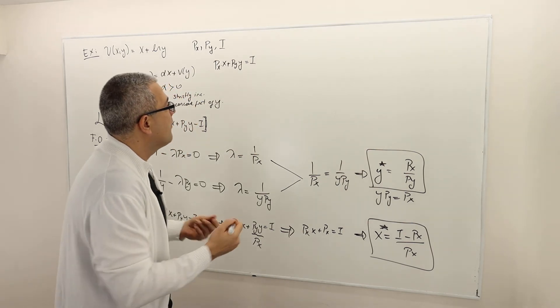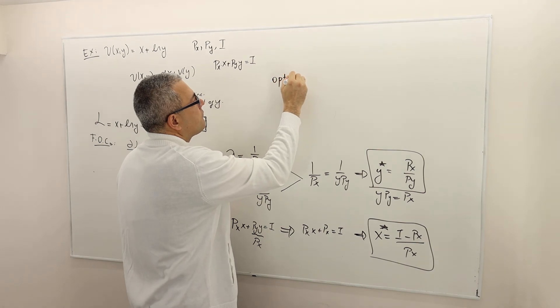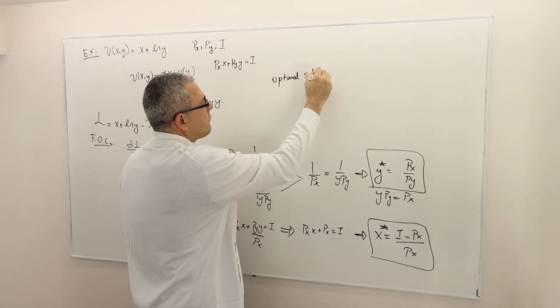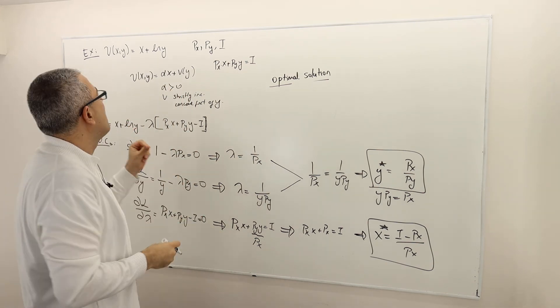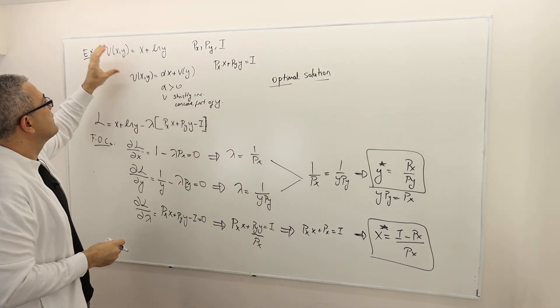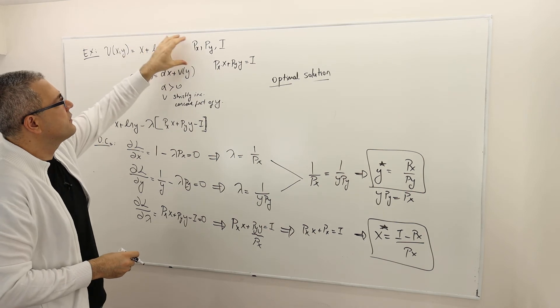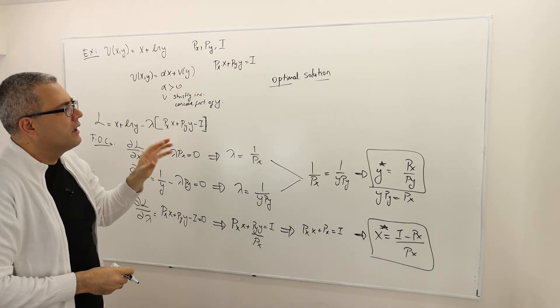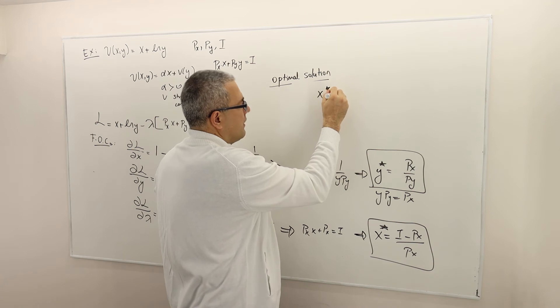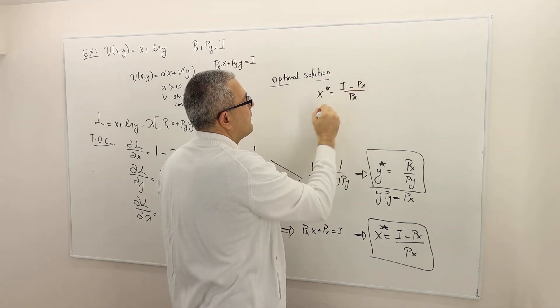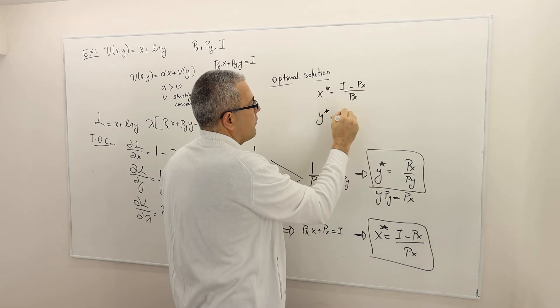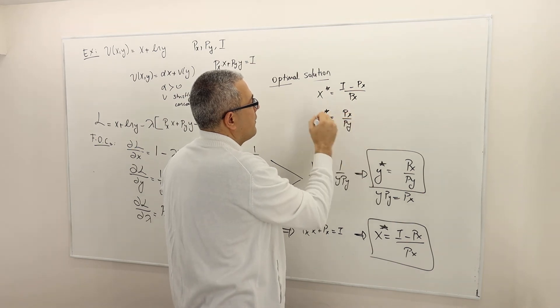So y star doesn't depend on the x value. The optimal solution, by which I mean the x and the y which solves this maximization problem, maximize utility subject to budget constraint, are x star equals (i minus px) divided by px, and y star equals px over py.